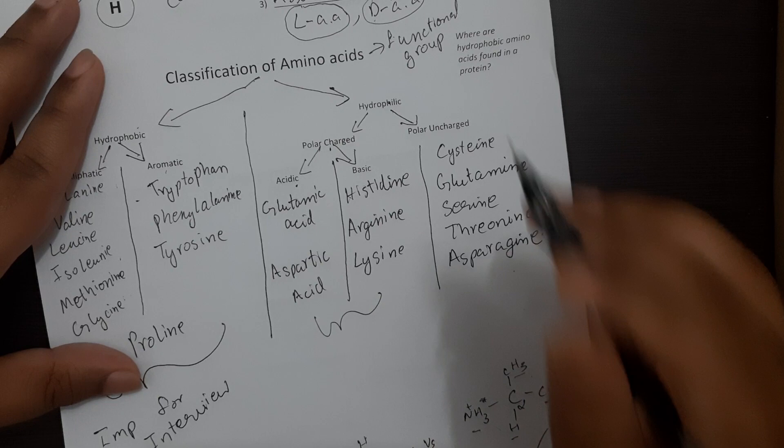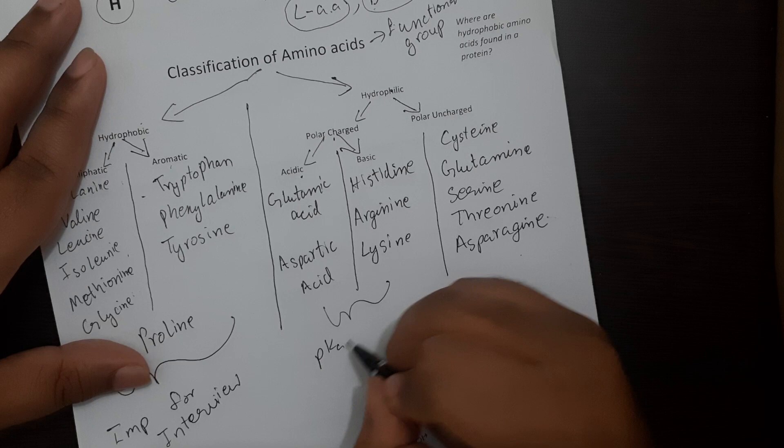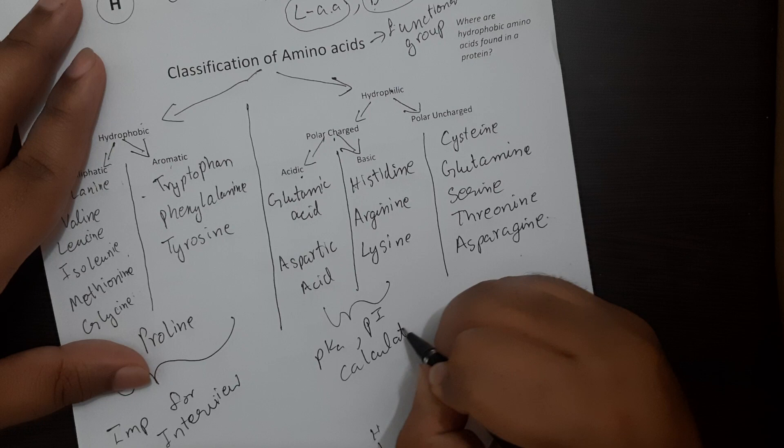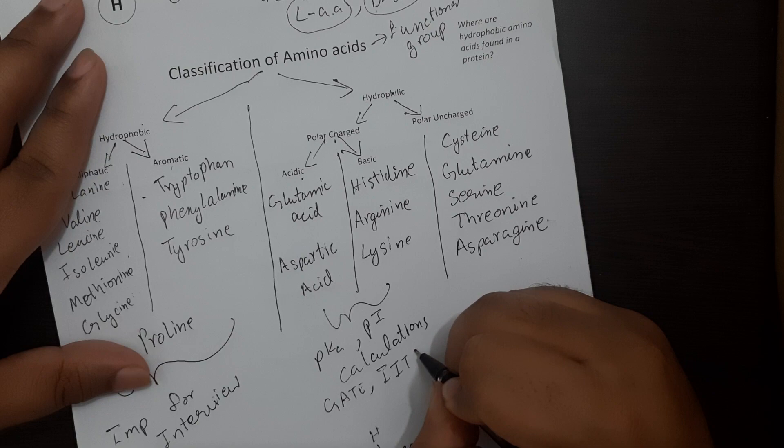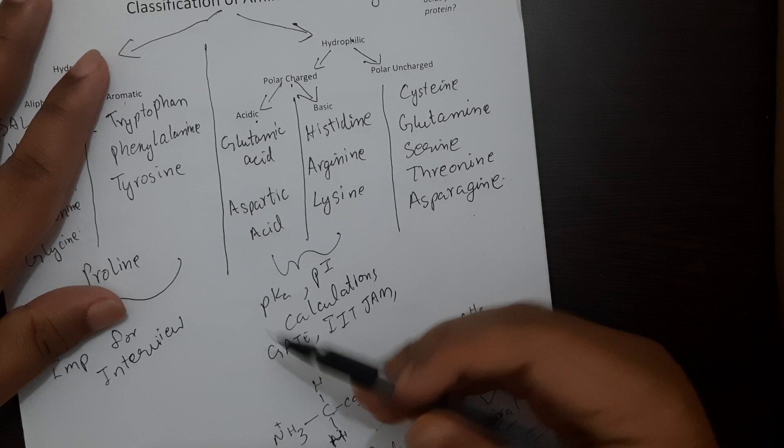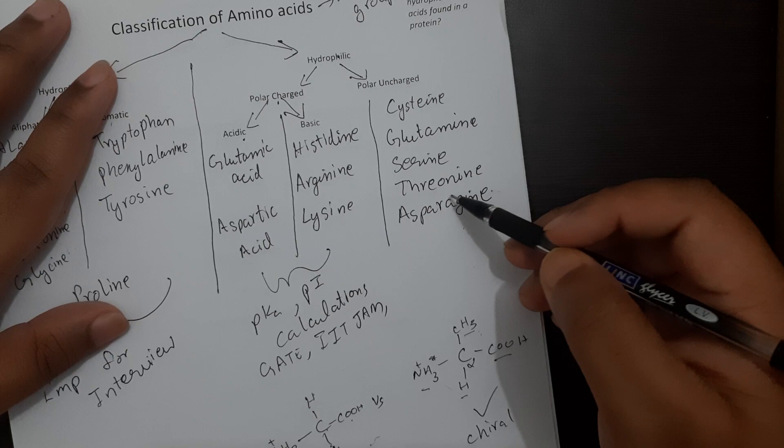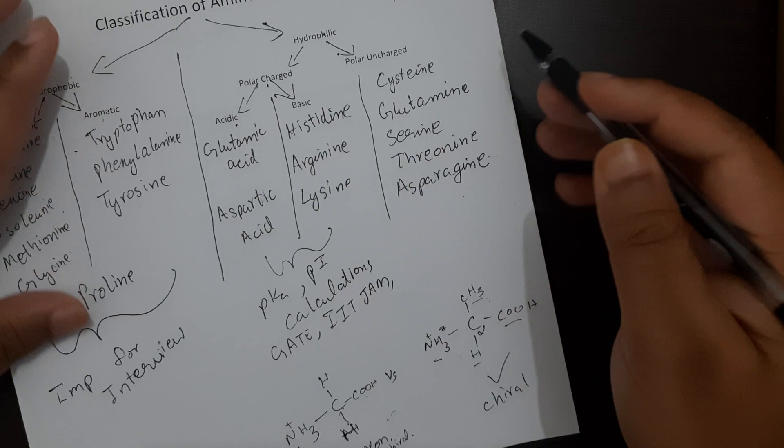Then next is your polar charged amino acids. These are very important to know how to solve questions related to pKa values or isoelectric point calculations. These calculations mainly come up in GATE, IITJAM and sometimes even in PhD interview questions. Finally, polar uncharged amino acids - it's important to know them but they're not usually asked everywhere. But it's always good to know them.